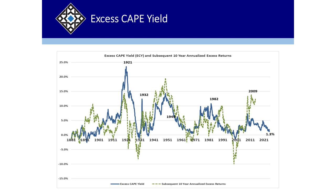If you use the 10-year TIPS yield, you get a little bit higher number — about 1.2%. But the bottom line is that expected returns over the next 10 years are very, very low if earnings continue to grow at their historic rate. And that's a key point right there.